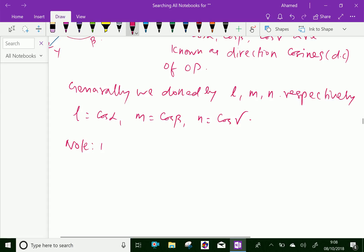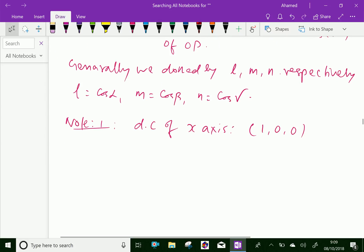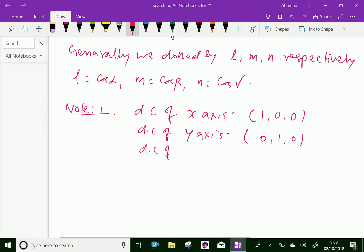Note, DC of X-axis is 1, 0, 0. X-axis means Y and Z axes are zeros. Therefore, cos beta and cos gamma is 0. Like that, DC of Y-axis is 0, 1, and 0. Similarly, DC of Z-axis is 0, 0, and 1.